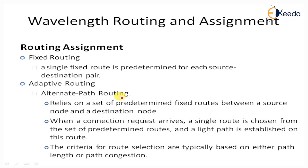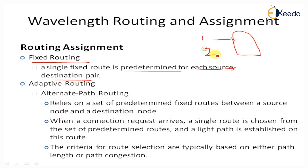In case of routing assignment, there are two types: fixed and adaptive routing. In fixed routing, a single fixed route is predetermined for each source-to-destination pair. For example, suppose nodes 1 and 2 are inputs and nodes 3 and 4 are outputs — node 1 always passes to node 4 and node 2 always passes to node 3. The predetermined path is always the same link for data transmission.